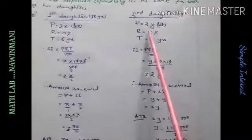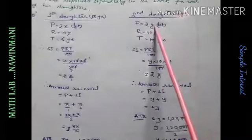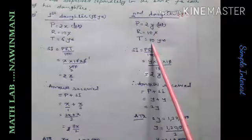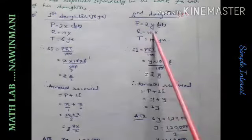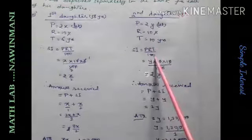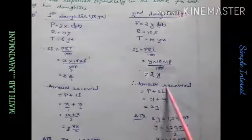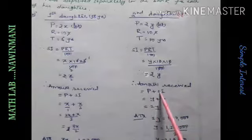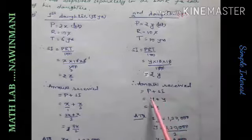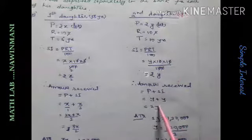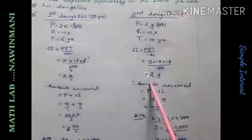For the second daughter, say he deposits y rupees. Y rupees for second daughter who is 8 years old. So, time will be 10 years. Rate 10 percent given. So, SI equals PRT by 100. Calculate, you get y rupees. So, when she reaches 18, Amount received is Principal plus interest. Principal is y, Interest is also y. So, 2y.